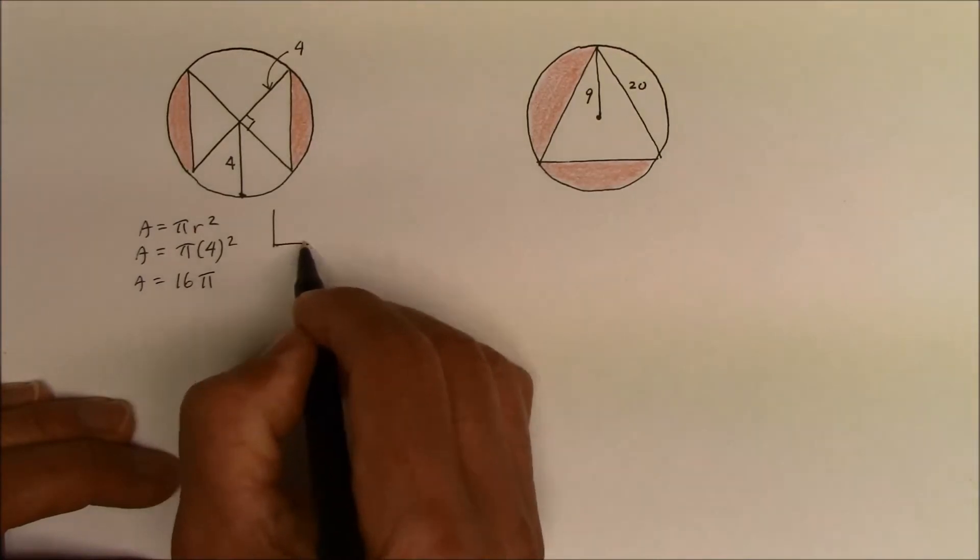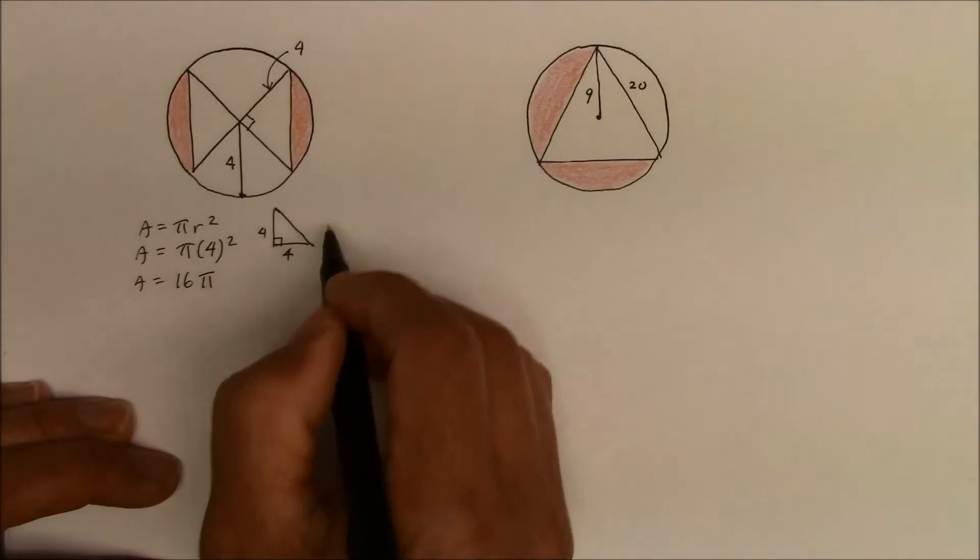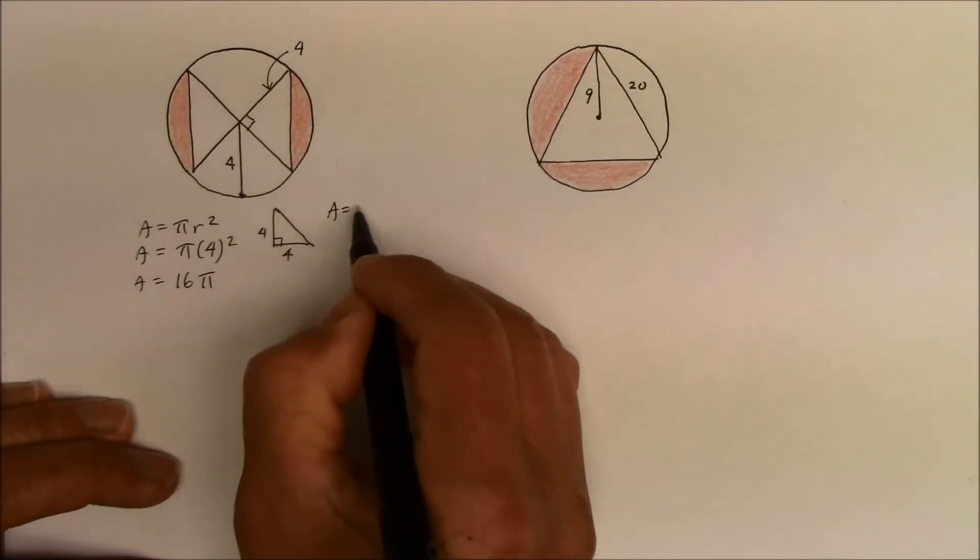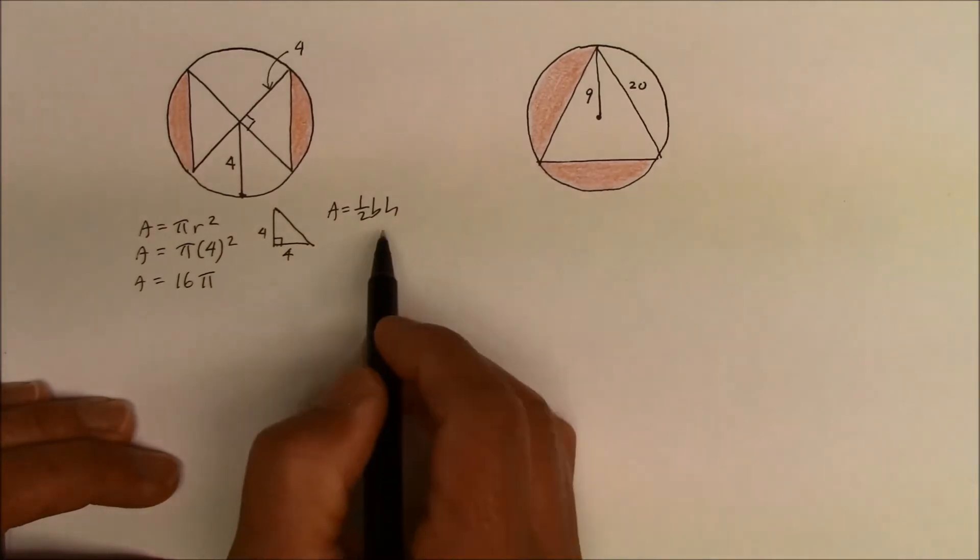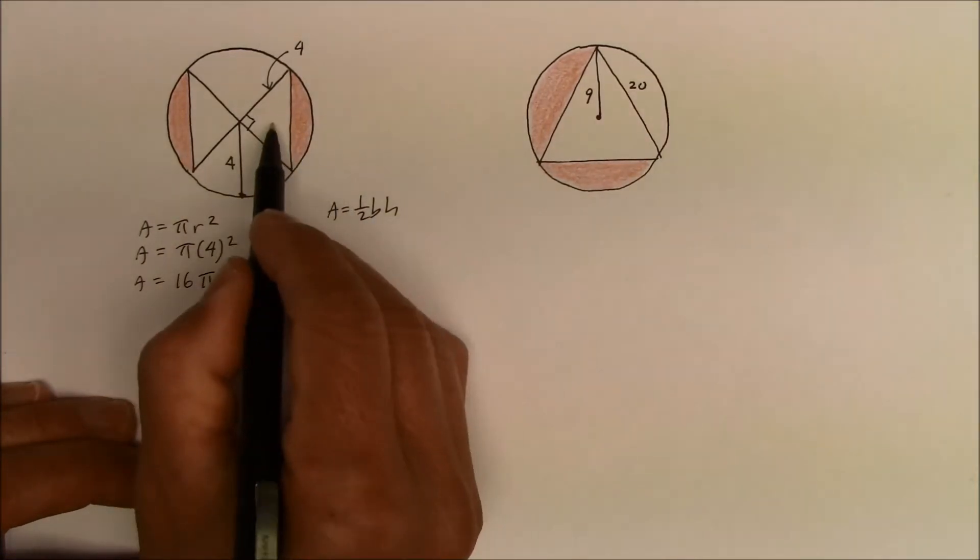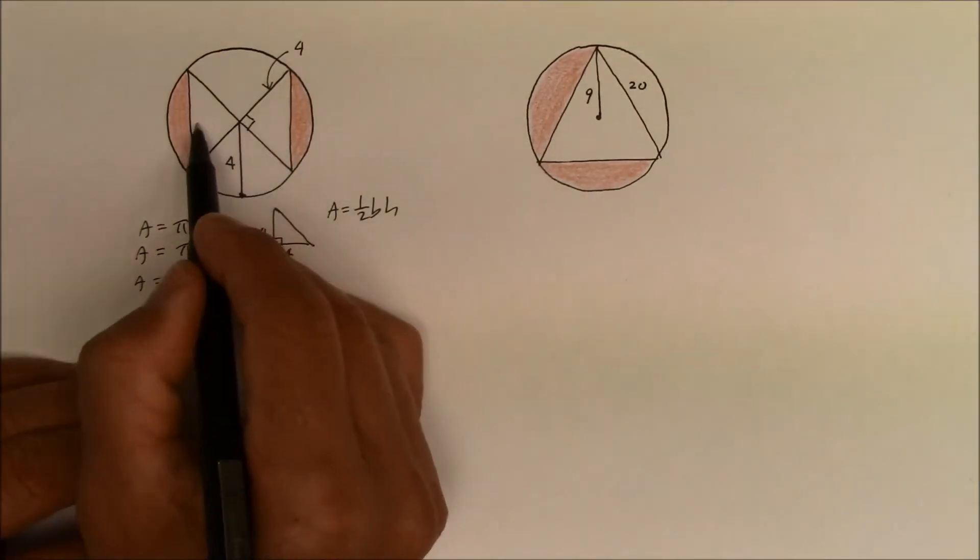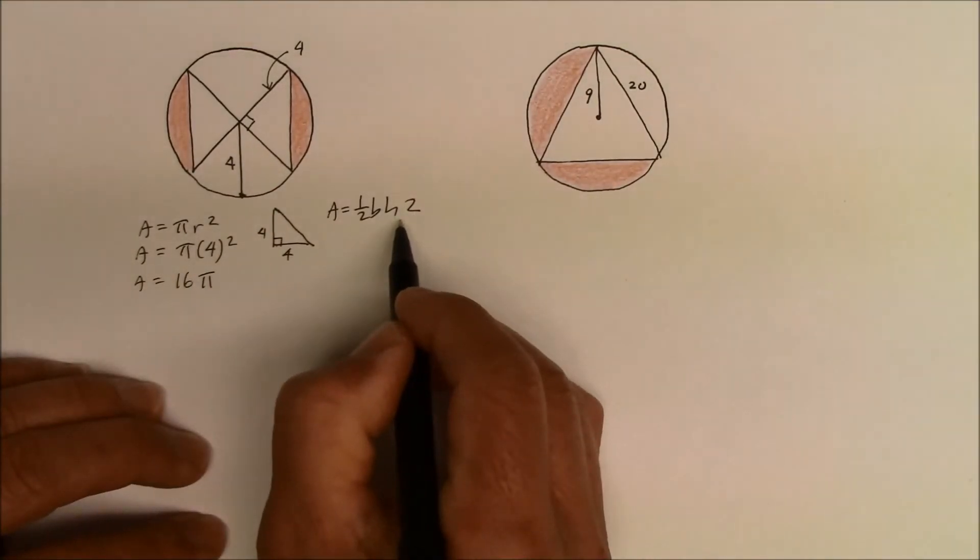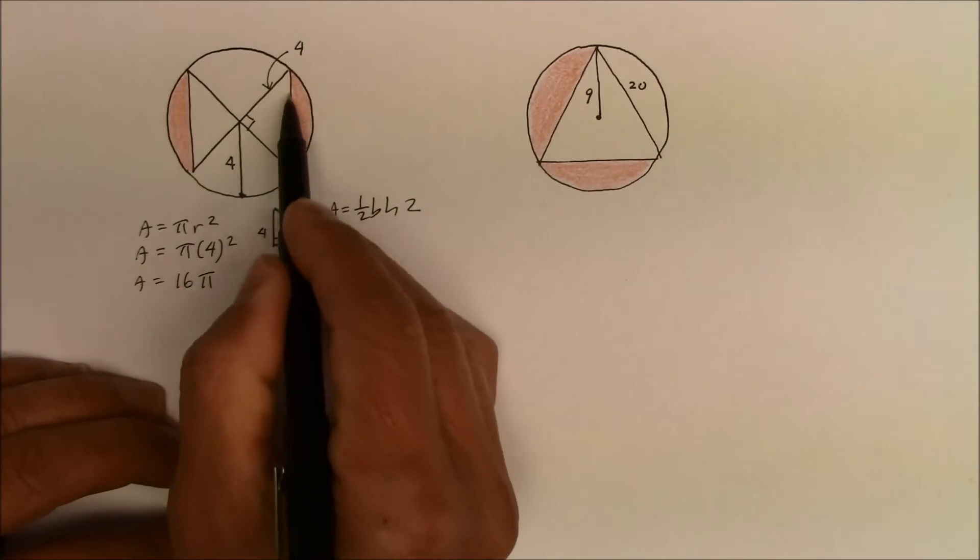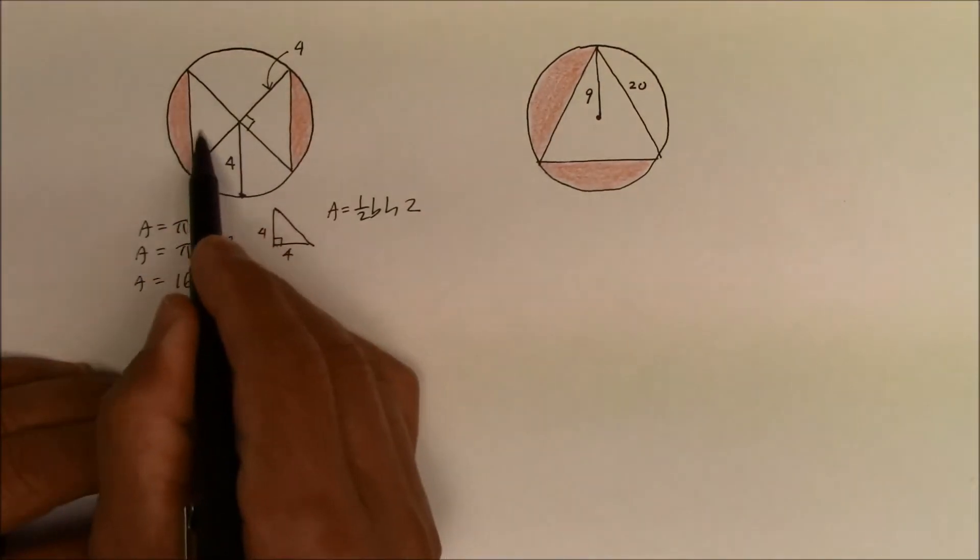So how do we find that isosceles right triangle? Well, the area for that is, of course, 1 half the base times height. But keep in mind, we have two of them. So there's two identical triangles, so we could say times 2. Whatever the area for that right triangle is, we're going to have two of them.